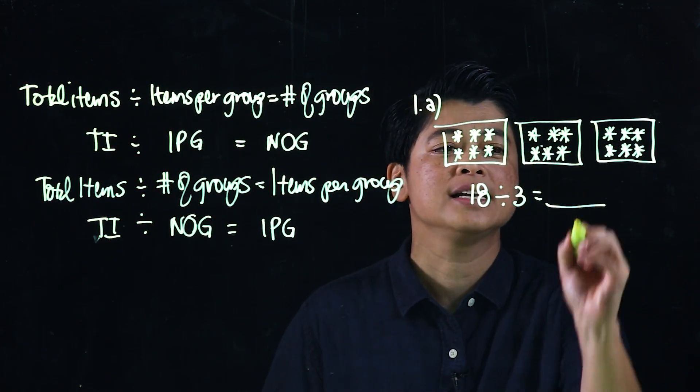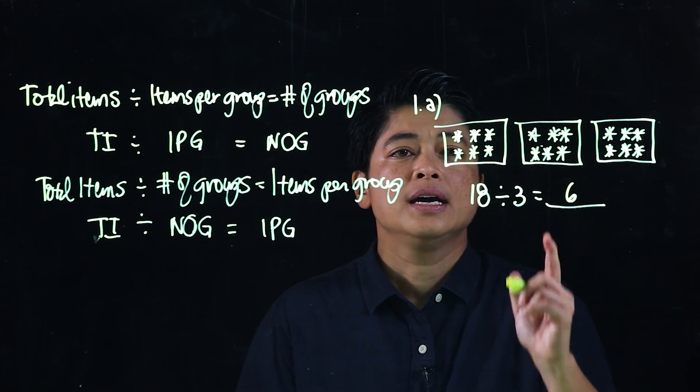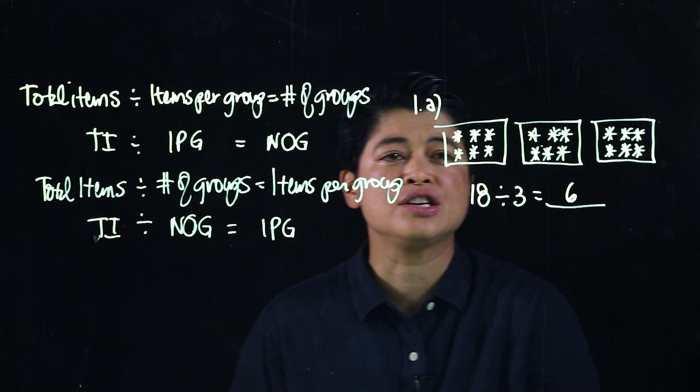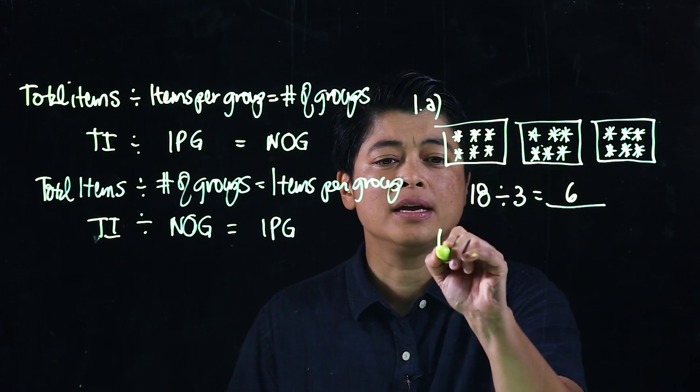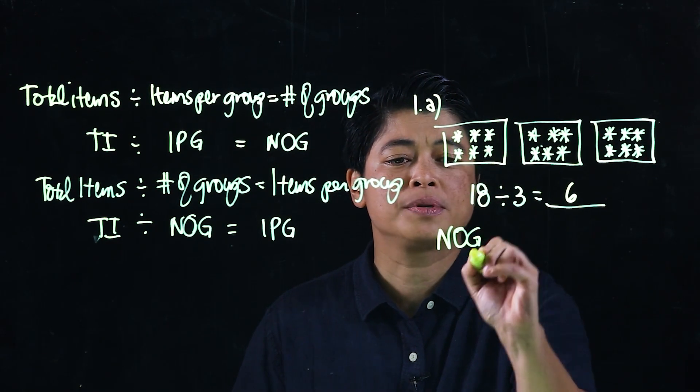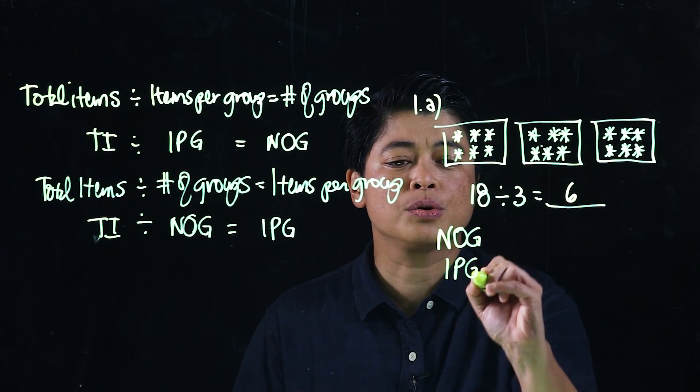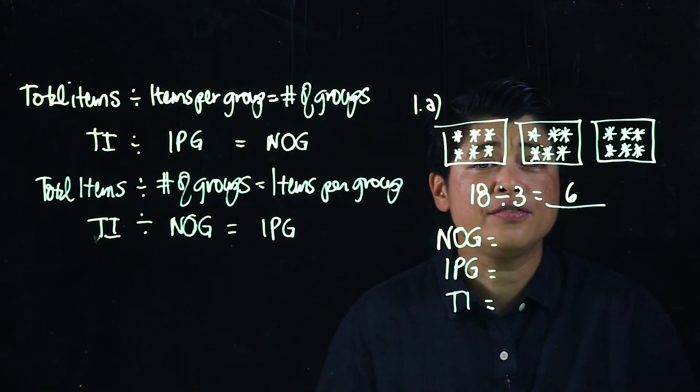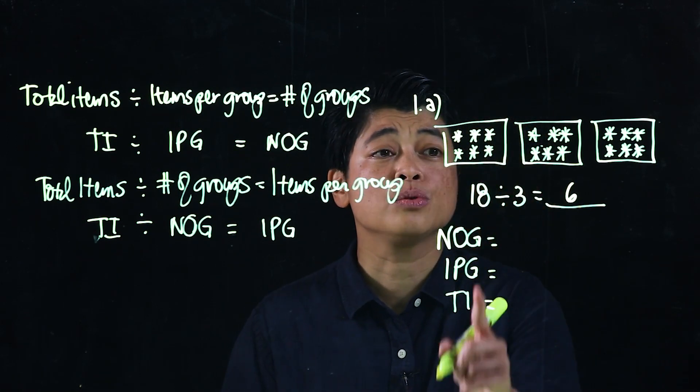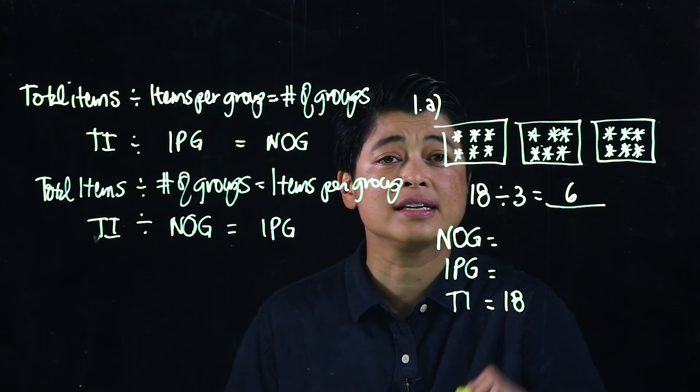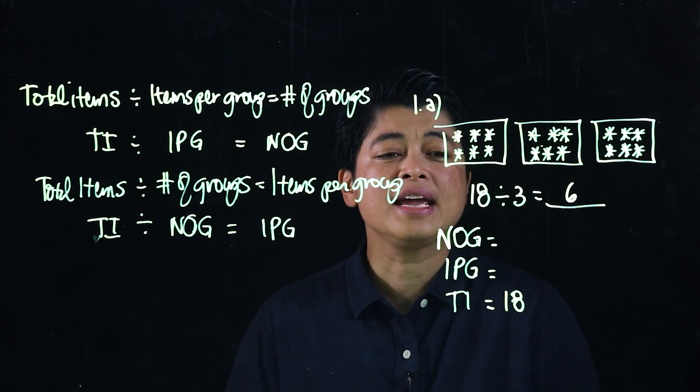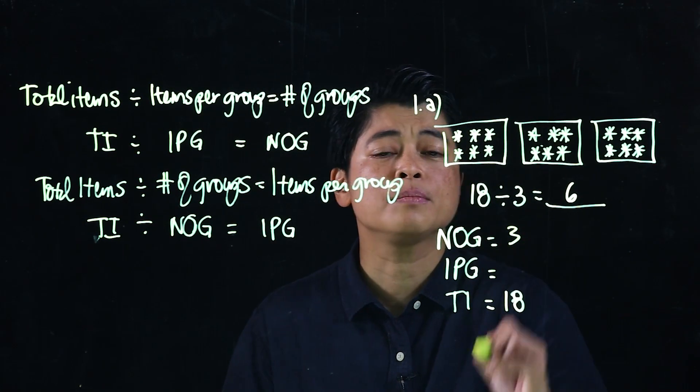So again this is how they're taught, but this is how we want to teach our kids. There will be three: number of groups, items per group, and total items. If we follow this logic, the total items is 18, that's the 18 biscuits, and there are three cats, so that means the number of groups is three.